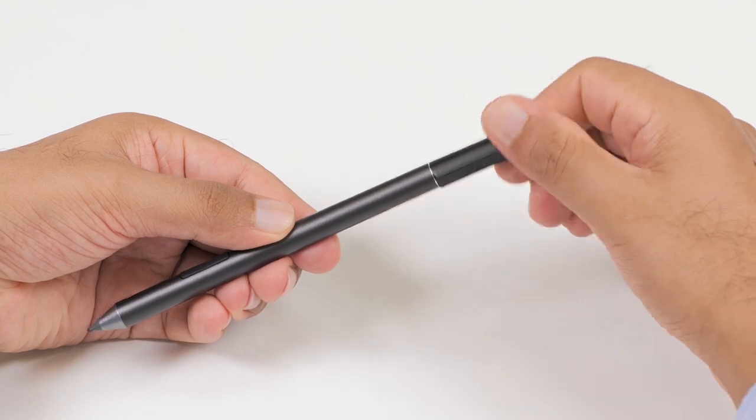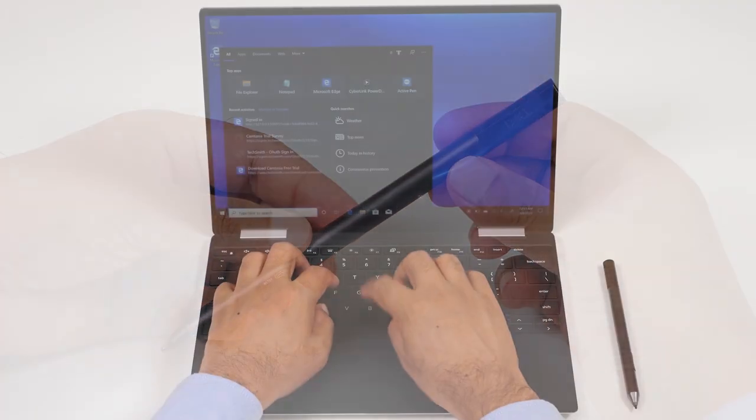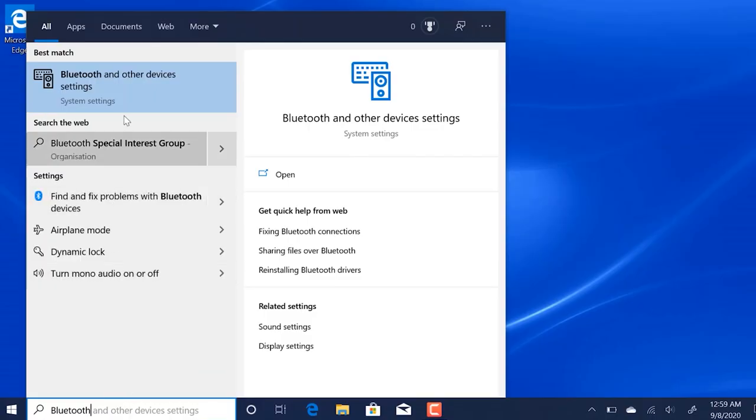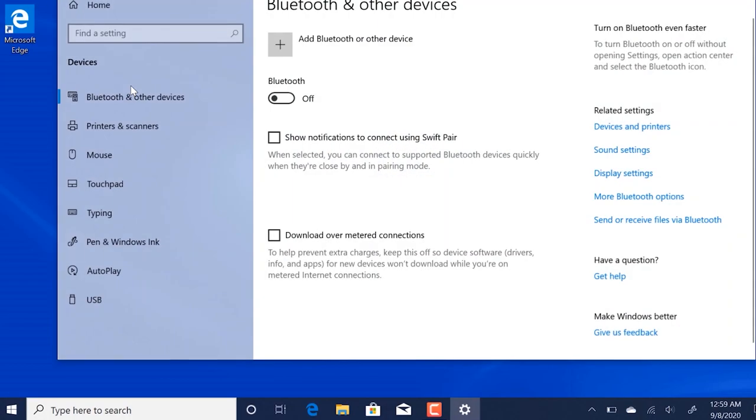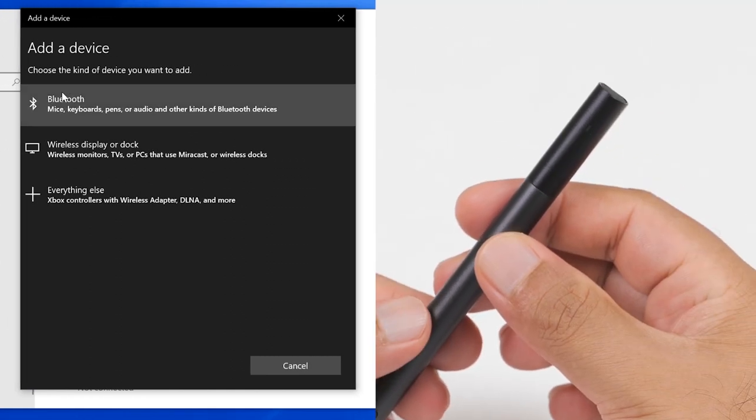Now, you are ready to pair the Dell Active Pen with your computer using Bluetooth. On your computer, open the Bluetooth and other devices settings window. If Bluetooth is turned off, turn it on. Then, click Add Bluetooth or other devices, followed by Bluetooth.